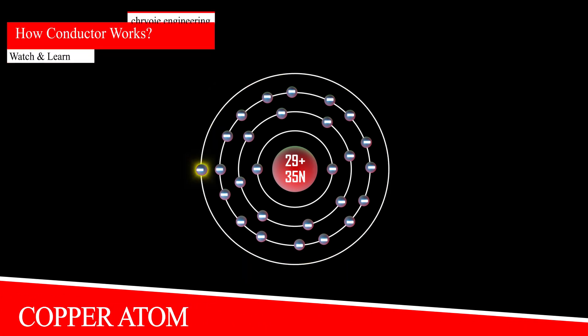This single electron is loosely held in its valence orbit and thus can become a free electron. The ability of this electron to freely move away from its nucleus gives the copper atom its current carrying capacity.